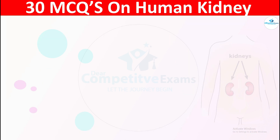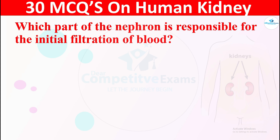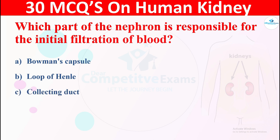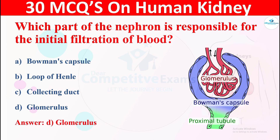Question 4: Which part of the nephron is responsible for the initial filtration of blood? The right answer is D, glomerulus. The glomerulus filters blood in the Bowman's capsule.